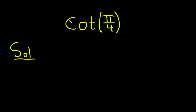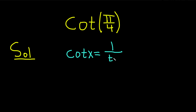We're going to start by writing down a super powerful formula. The cotangent of x is equal to 1 over the tangent of x. There are other formulas you could use and there are other ways to do this — you could use the one that is sine over cosine, or you could even draw a triangle to get the answer as well.